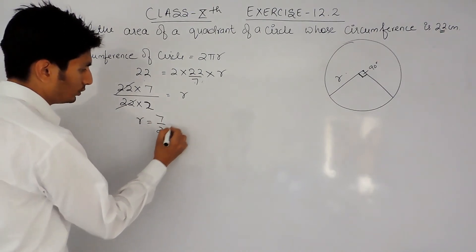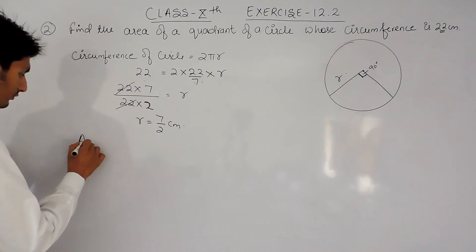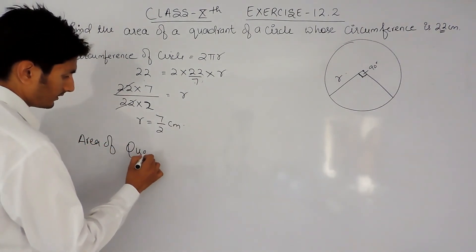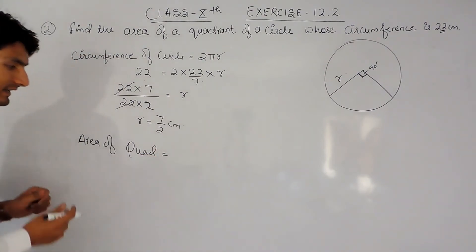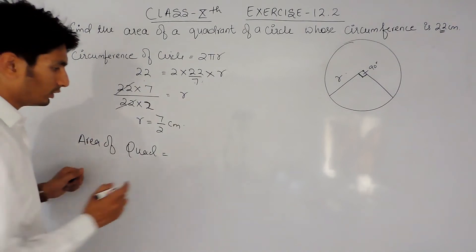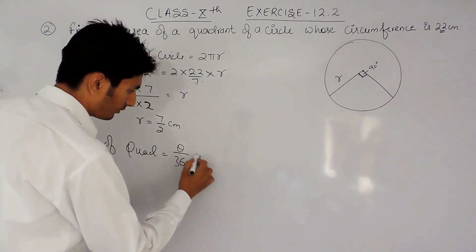Now I have to find the area of the quadrant. I already discussed in the previous video that whenever we have to find the area of a quadrant, we are finding the area of a sector. So if I have to find the area of a sector, it's θ/360 times πr².